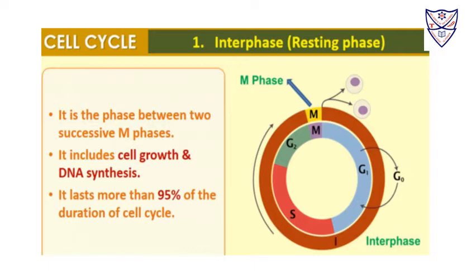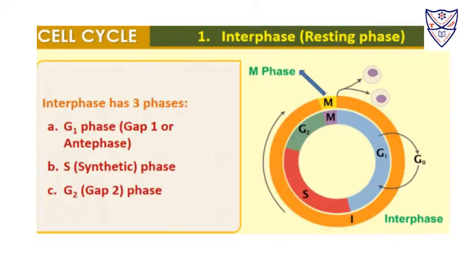Interphase itself has three phases: G1, S phase, and G2 phase. G1 is the first gap phase, also called the pre-synthetic phase. Then we have the S phase, which is the synthetic phase, and then G2, which is the second gap phase.